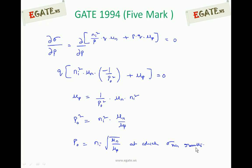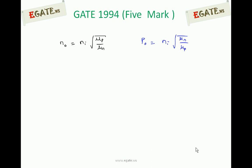We have now calculated two values: n₀, the electron concentration, and p₀, the hole concentration, at which minimum conductivity results. By examining these two equations for n₀ and p₀, we can determine whether the semiconductor is n-type or p-type at minimum conductivity.